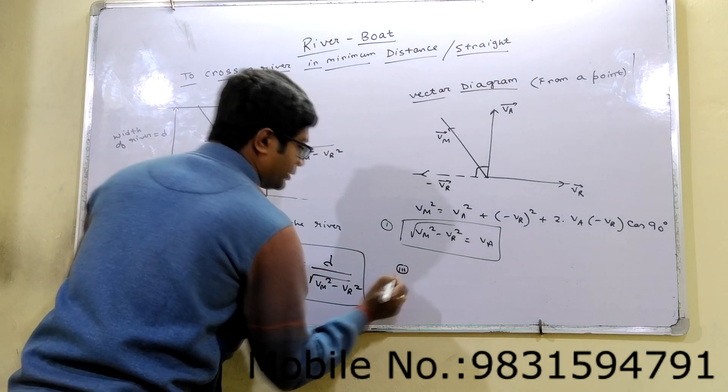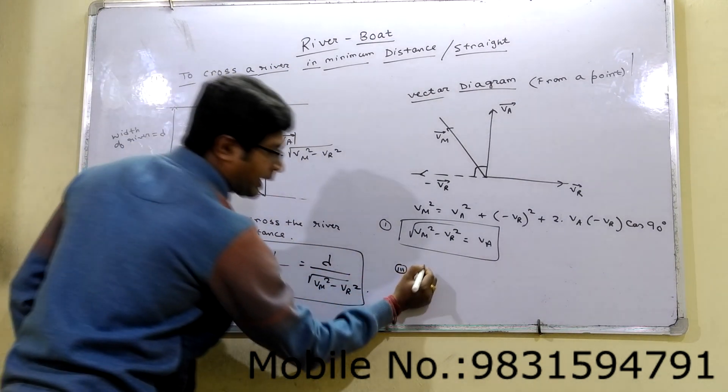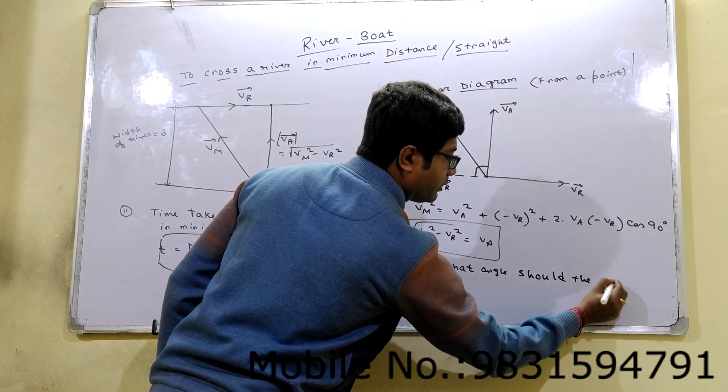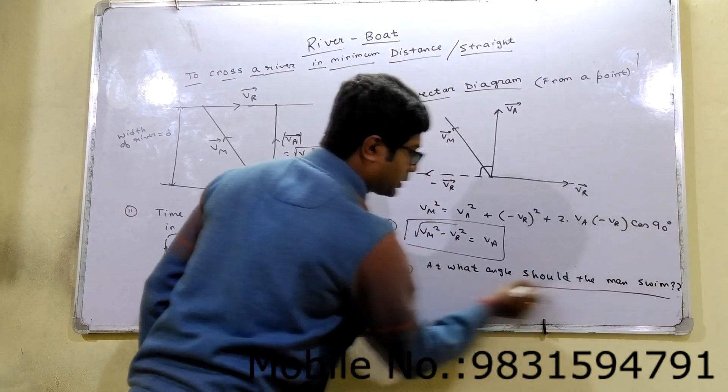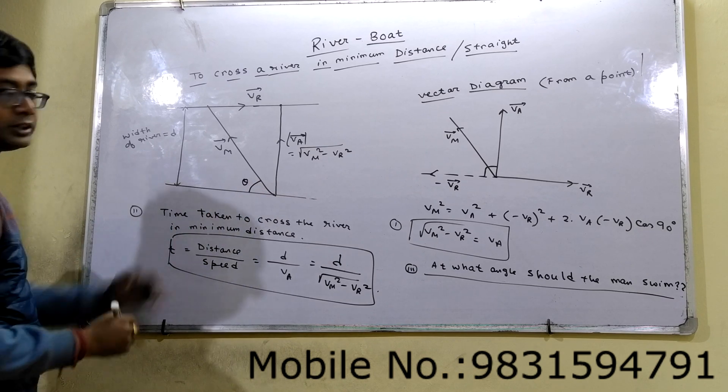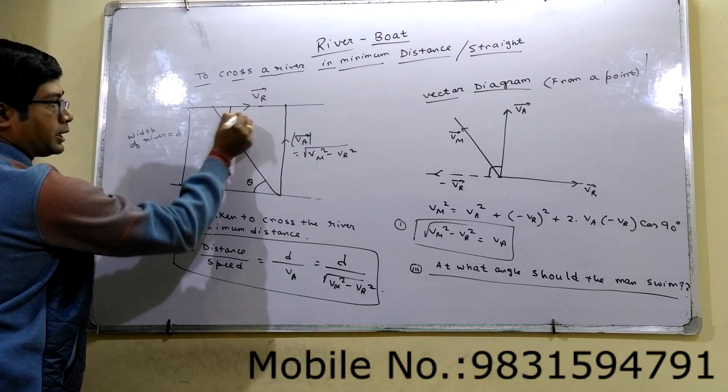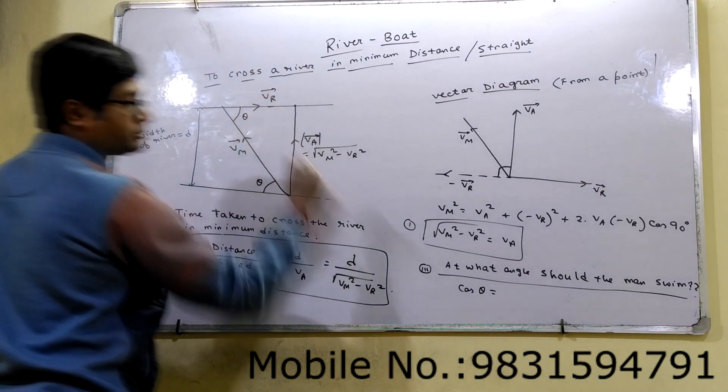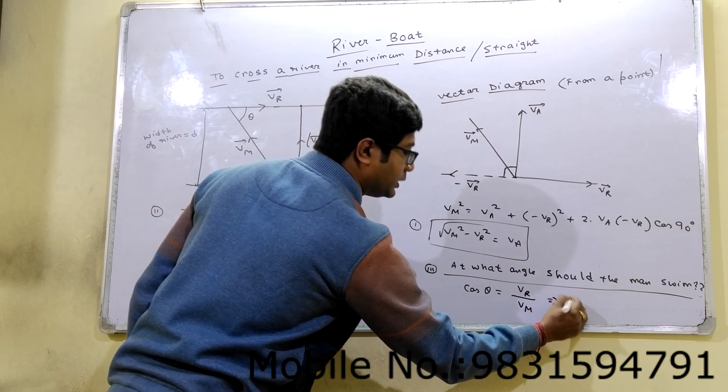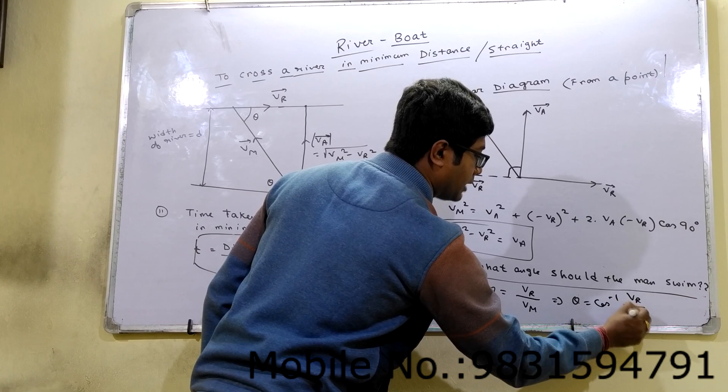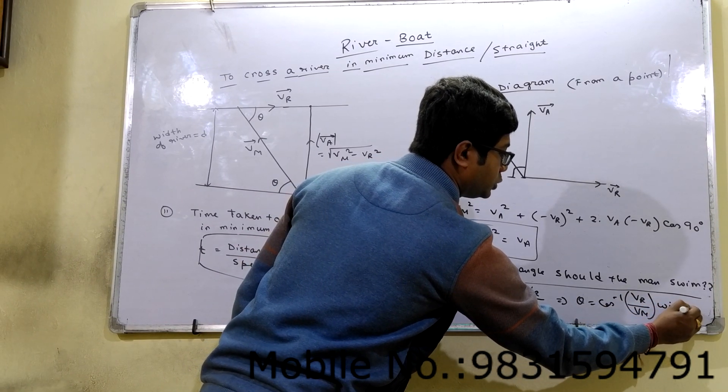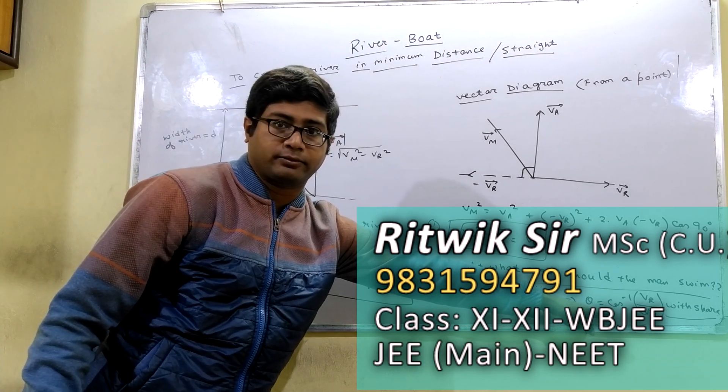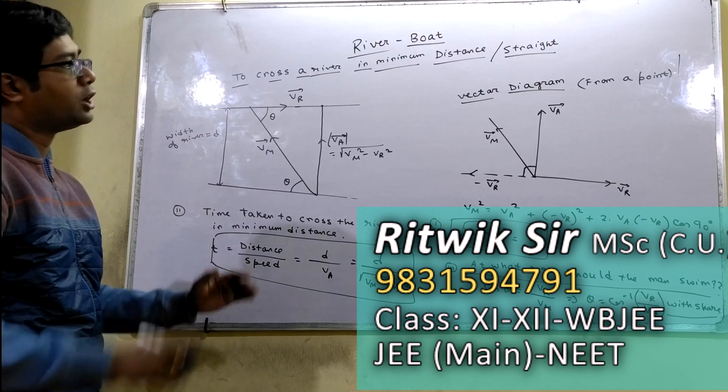And number three, part number three: at what angle should the man swim? This is theta, with the shore of the river. Cos theta will be base by hypotenuse. Base is VR and hypotenuse VN. So theta will be cos inverse VR by VN, with the bank or with the shore. The man should swim at this angle. This is the first case, to cross a river in minimum distance or straight cross.